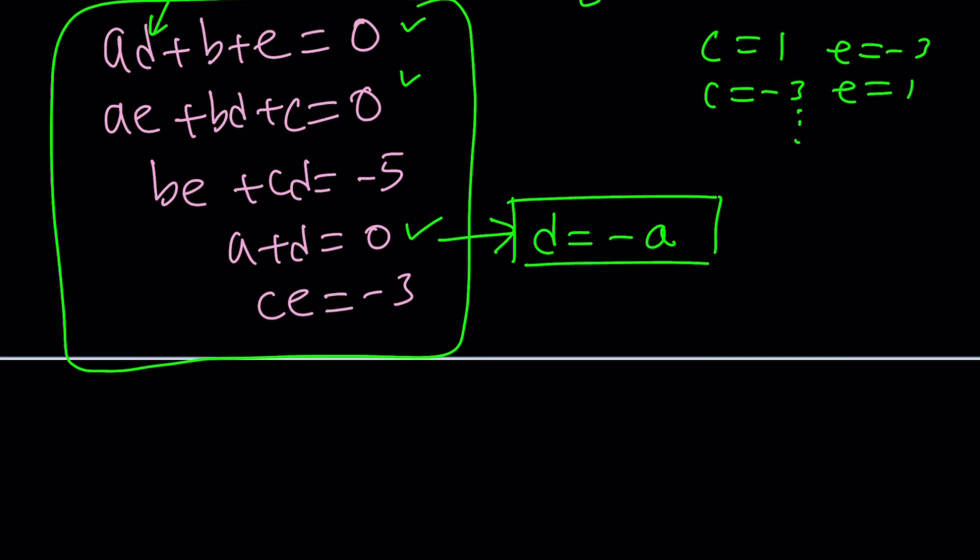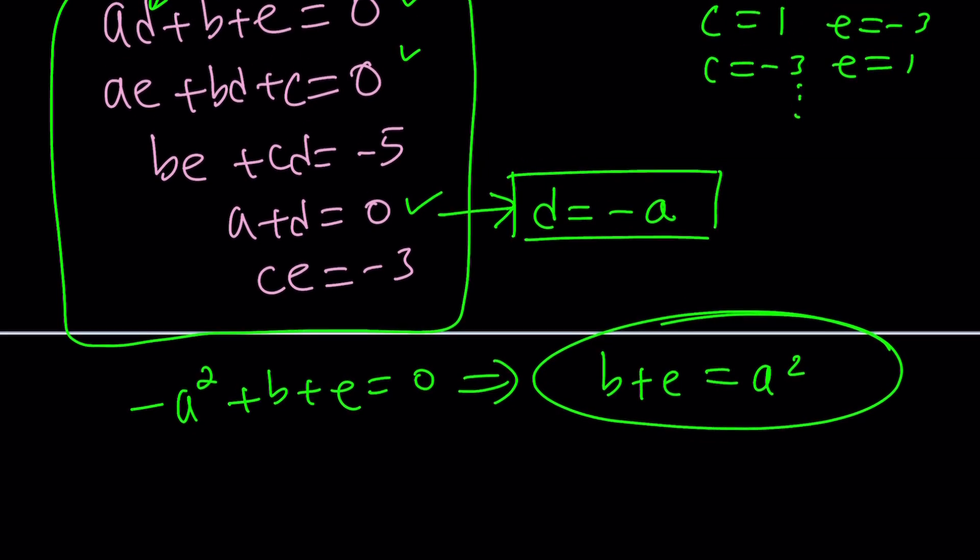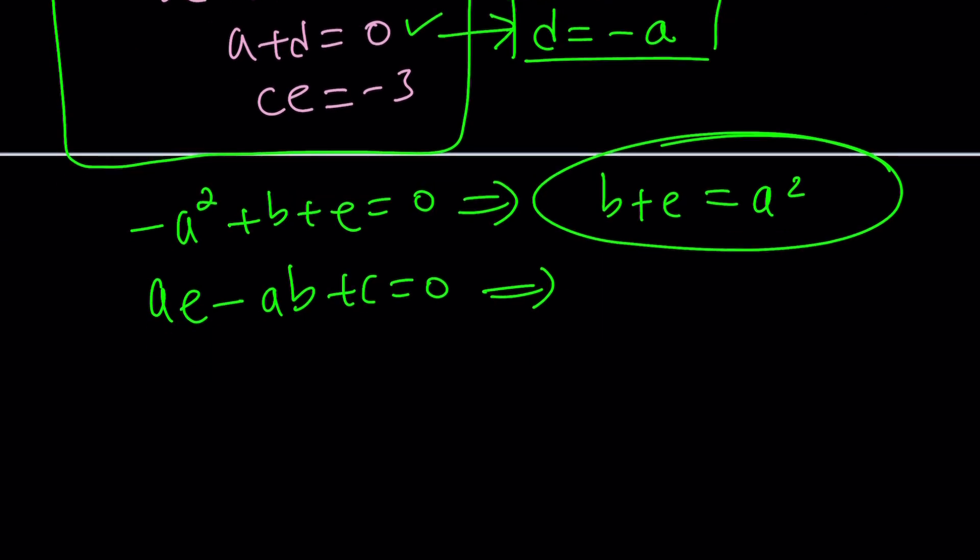So if you replace d with negative a here, that's going to give you negative a squared plus b plus e equals zero, which implies b plus e equals a squared. So let's go ahead and save it. You never know how that's going to be helpful. And then replace the d with negative a again.